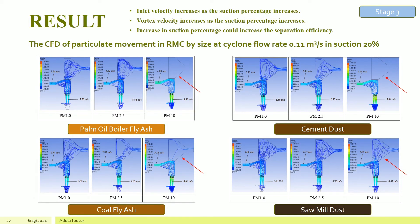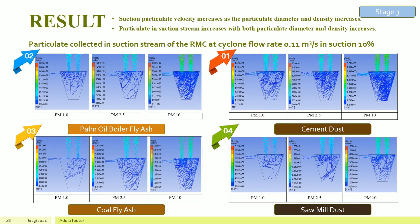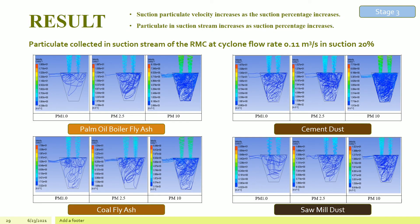A similar trend is observed for the CFD of particulate movement in RMC at suction 20%. Particle escape at suction 20% is even lesser than at suction 10%, indicating greater separation efficiency, because increasing suction percentage increases inlet and vortex velocity, creating a larger centrifugal force. The results show an increment in particulate collected at the suction stream when increasing particle diameter and density. Cement dust has the highest amount of particulate collected at the suction stream, followed by BOMFA, coal fly ash and sawmill dust. As expected, the 20% suction stream has a higher particulate count at all sizes compared to 10% suction, because increasing suction percentage results in greater suction particulate velocity and a greater cyclone flow rate.